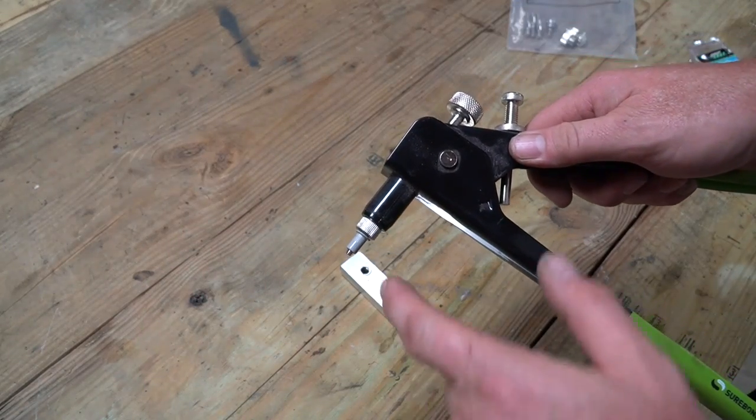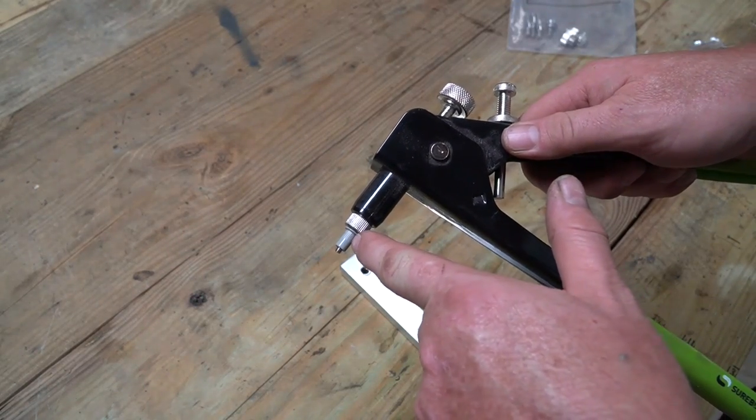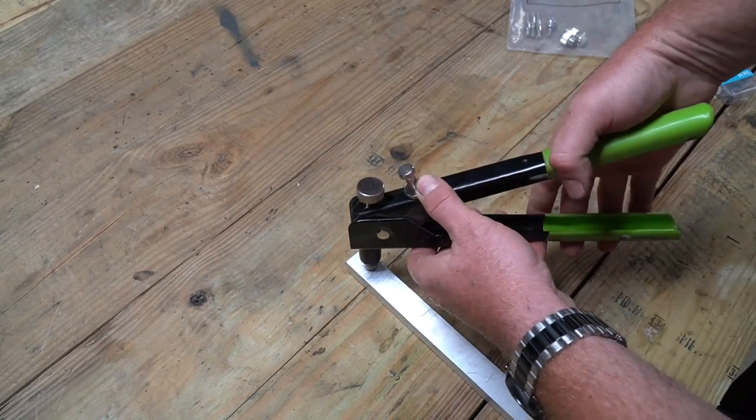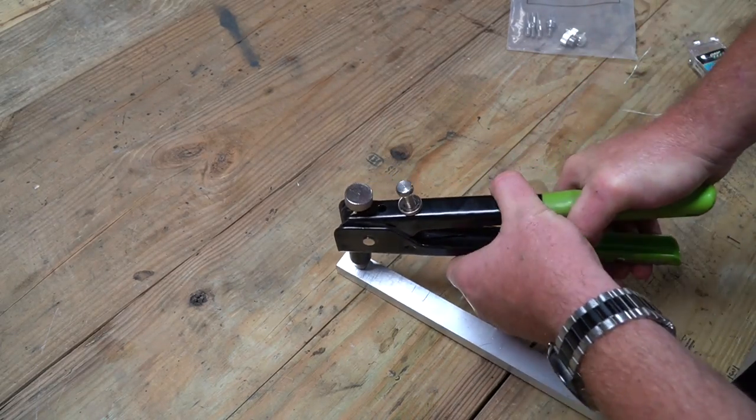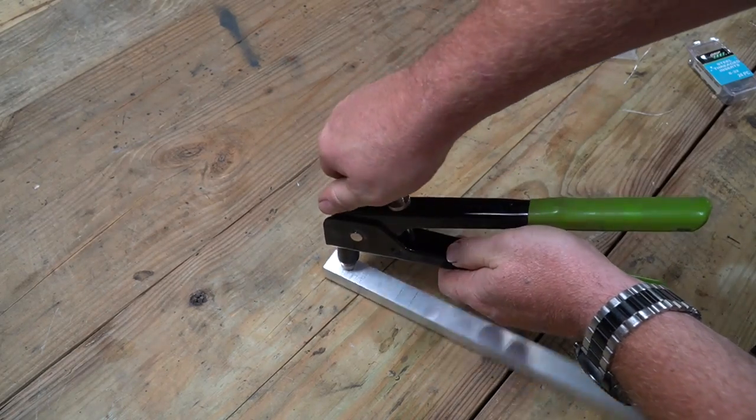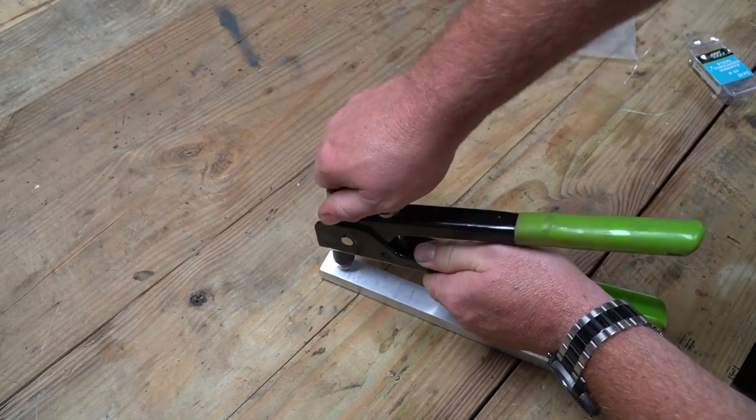After you have the hole drilled you take the nut insert already threaded onto the tool itself, put it in the hole like so and squeeze together. And you're going to squeeze it pretty tight, and then this guy here is knurled so you can back it out.